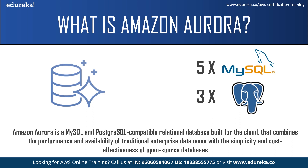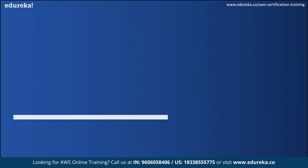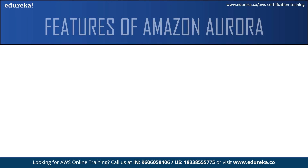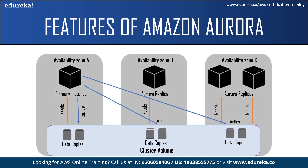Now let us understand what Amazon Aurora DB clusters are. An Amazon Aurora DB cluster consists of one or more DB instances and a cluster volume that manages the data for those DB instances. A DB instance is an isolated database environment running in the cloud, and a cluster volume is a virtual database storage volume that spans multiple availability zones, with each availability zone having a copy of the DB cluster data.